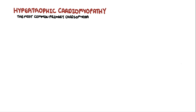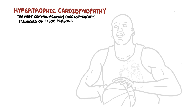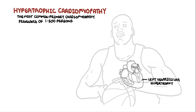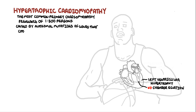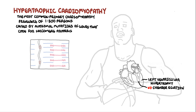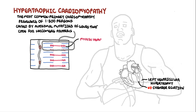Hypertrophic cardiomyopathy is the most common primary cardiomyopathy with a prevalence of 1 in 500 persons. It is defined as left ventricular hypertrophy without chamber dilation, and is caused by an autosomal dominant mutation of genes that code for sarcomere proteins. The most common mutation is of the myosin heavy chain.